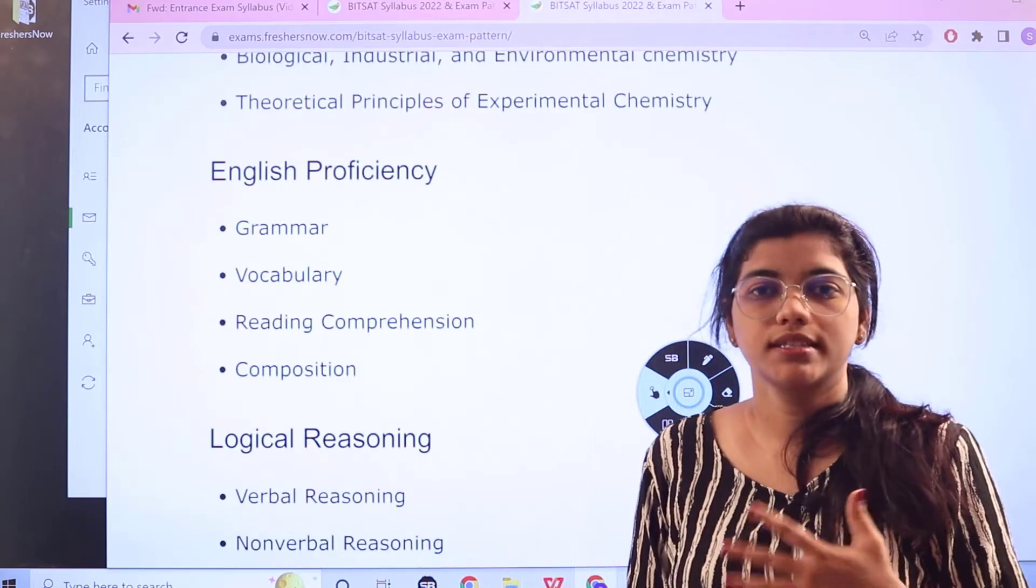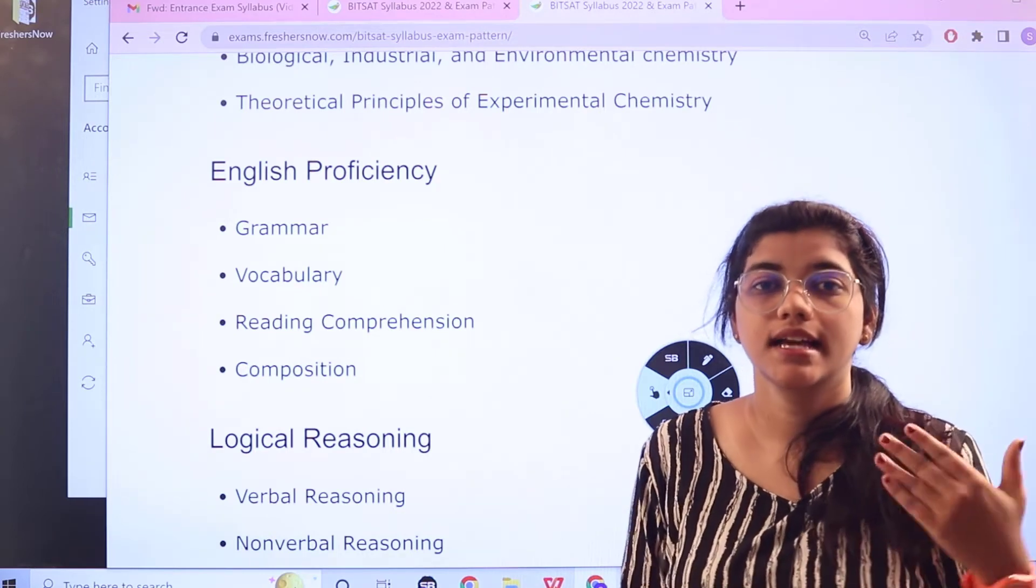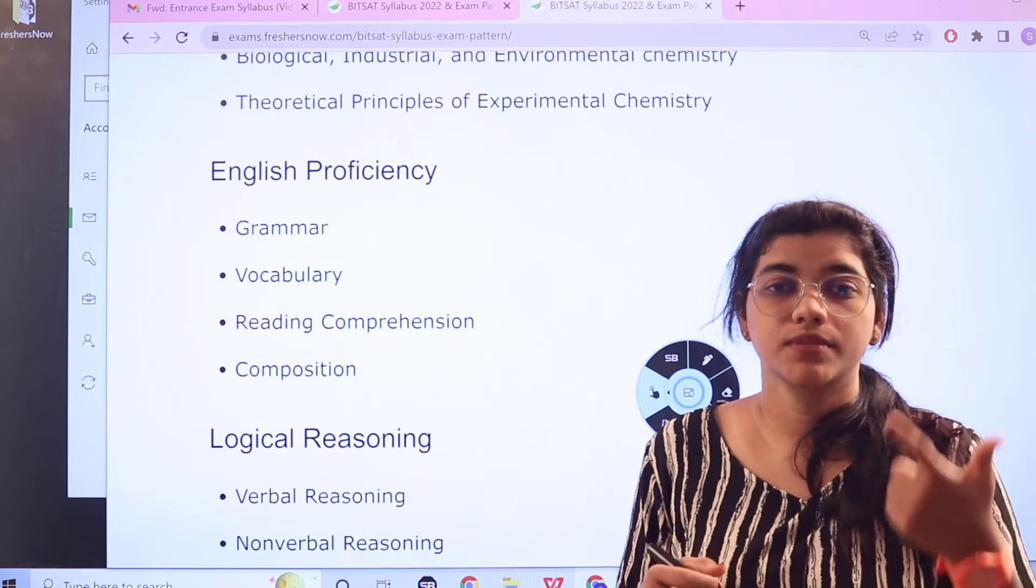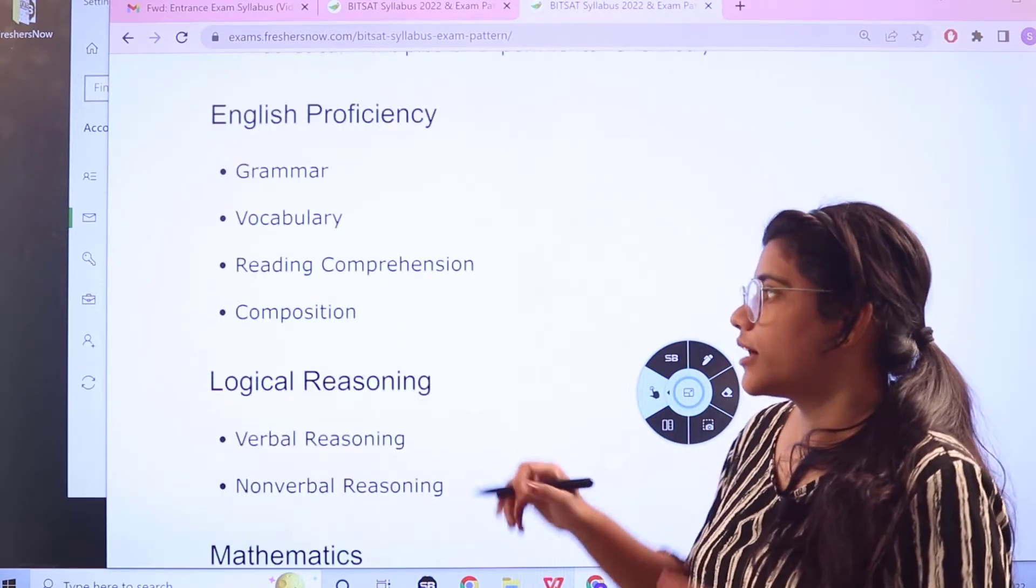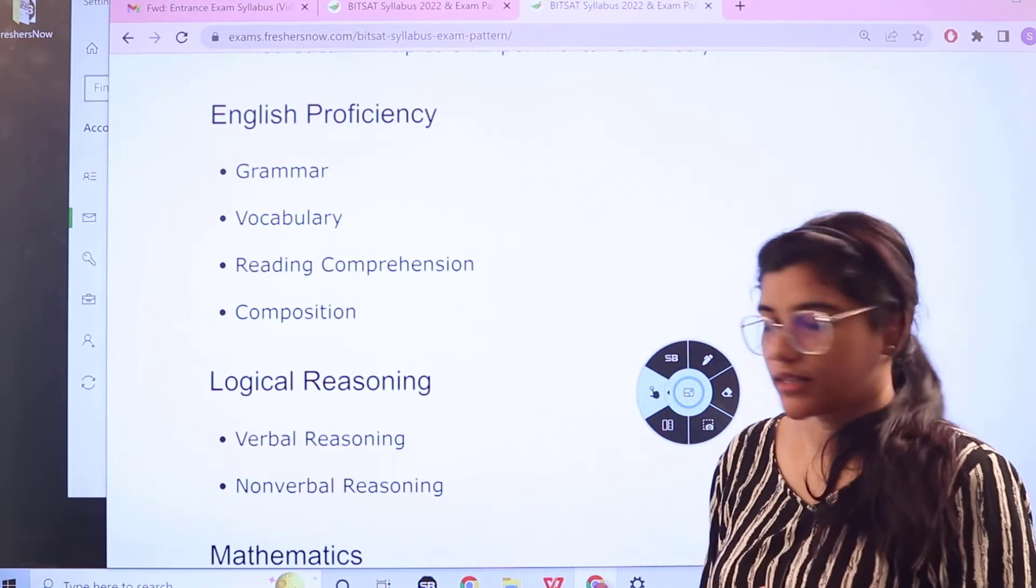For English proficiency, we will be starting with basic grammar, usage of words, sentences, placement of words, then you have tenses, synonyms, antonyms, homonyms. Apart from this, other things are knowing about the vocabulary, understanding the reading comprehension and the composition perspectives.